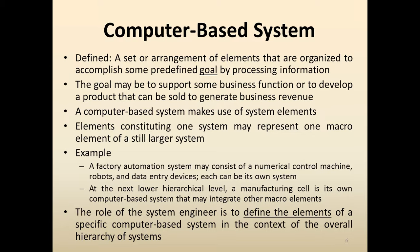A Computer Based System may be defined as a set or arrangement of elements that are organized to accomplish some predefined goals by processing information. The basic goal may be to support some business functions or to develop a product that can be sold to generate business revenues. These elements constituting one system may represent one macro-element of a still larger system. For example, a factory automation system may consist of numerical control machines, robots, and data entry devices — each can be its own system.